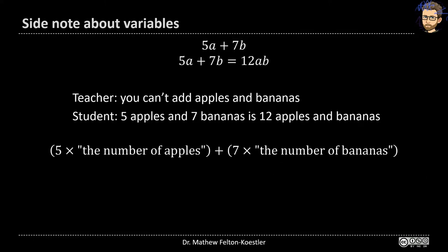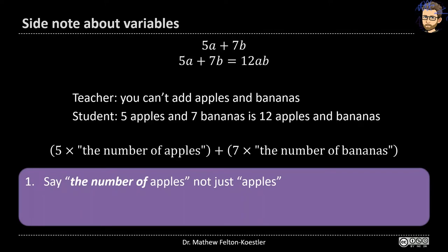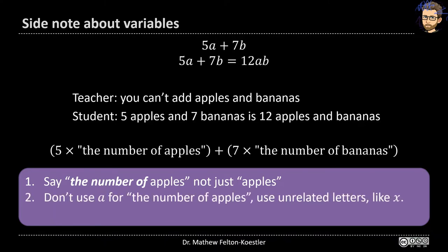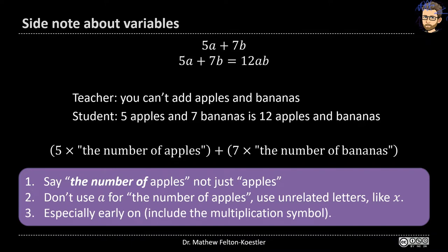To address this issue, you can do a couple of things. You might really emphasize that it's the number of apples, not just apples, and use that phrasing when you use variables — more generally emphasizing that what goes into variables is numbers or quantities, not a real-world thing like an apple. You can also avoid using A for the number of apples and use unrelated letters like X. And especially early on, you might include the explicit multiplication symbol, writing five times A instead of just the shorthand 5a.